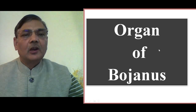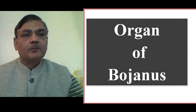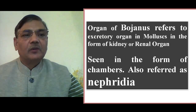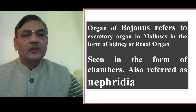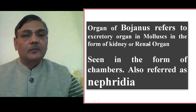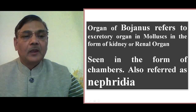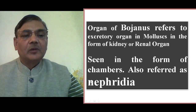With the help of a couple of slides, I am going to explain about the organ of Bojanus. The organ of Bojanus refers to the excretory organ in mollusks, which is found in the form of a kidney, or paired kidney, and is also known as the renal organ. Some people call such structures nephridia, because in invertebrates we use the term nephridia for excretory structures.